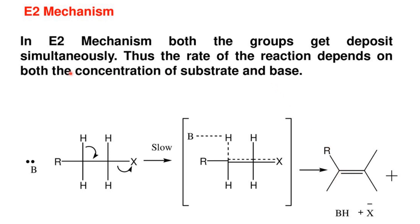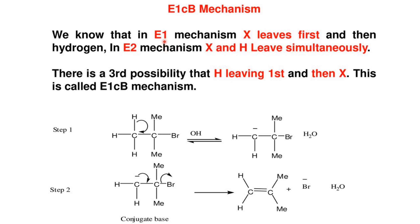In E2, the reaction rate depends on both the concentration of the substrate and the base. E2 follows second-order kinetics. E1 is first-order, depending only on the substrate.